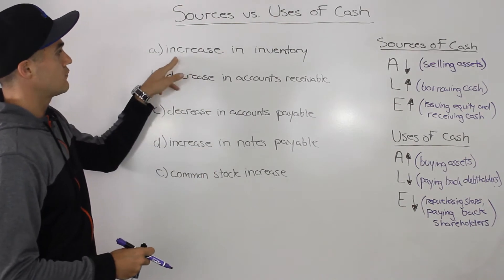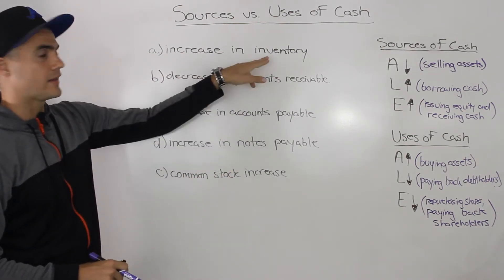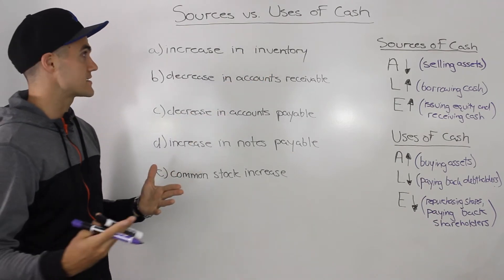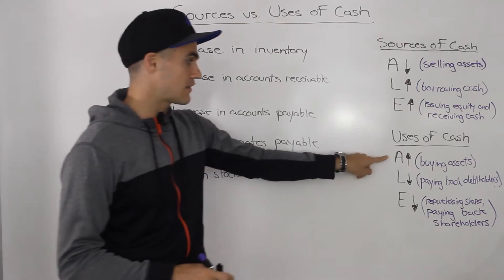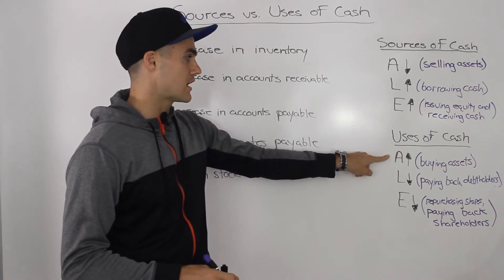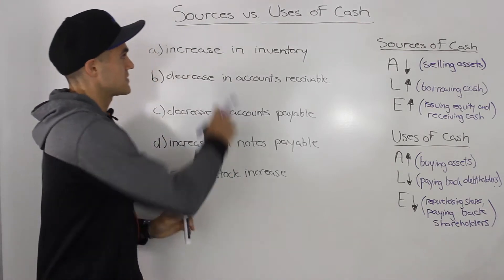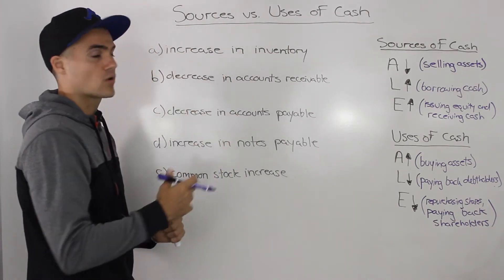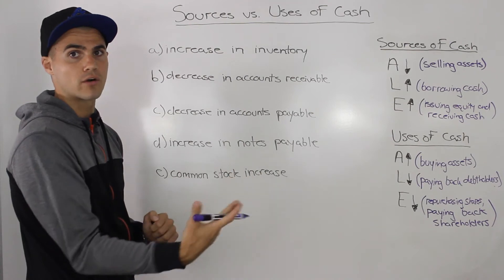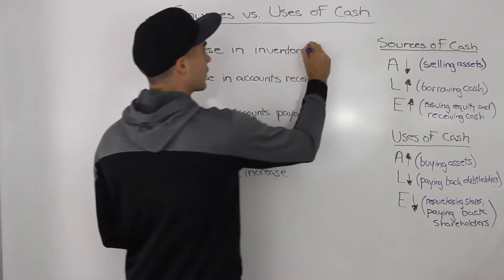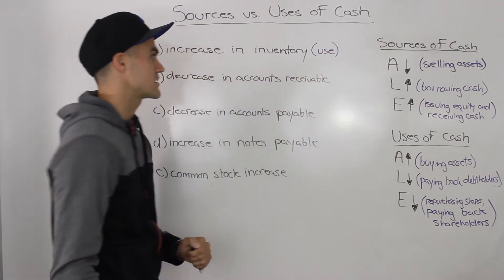Let's go over some specific scenarios from the actual question. Starting with scenario A: an increase in inventory. Inventory, as you know, is an asset account. When an asset is increasing, that is a use of cash. More specifically, an increase in inventory means that you are buying more inventory, hence you are using cash. So this is a use of cash.